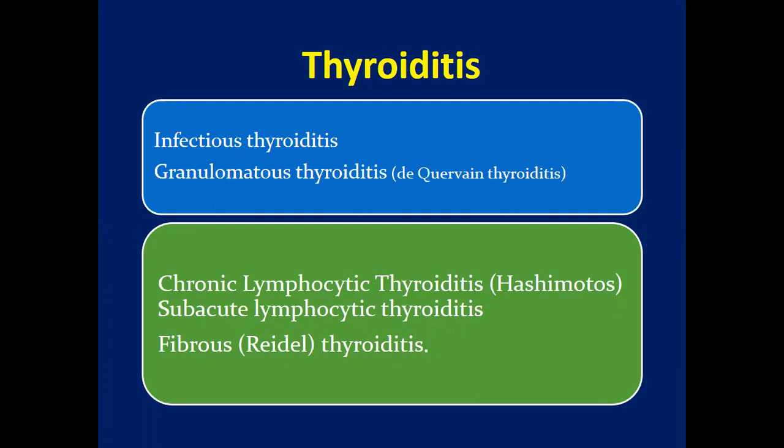These diseases include conditions that result in acute illness with severe thyroid pain, like infectious thyroiditis and subacute granulomatous thyroiditis, as well as disorders with relatively little inflammation manifested by thyroid dysfunction in the form of disturbances in thyroid hormone levels, such as subacute lymphocytic thyroiditis and fibrous thyroiditis.